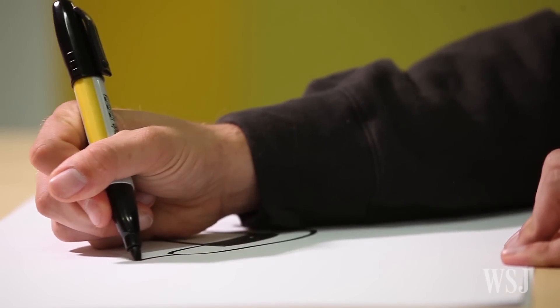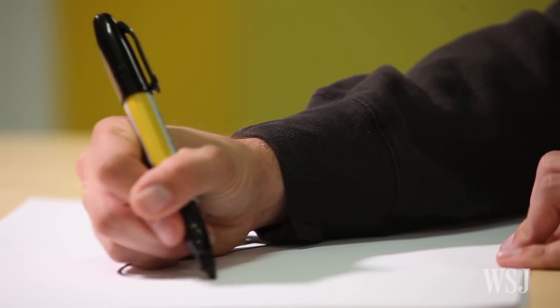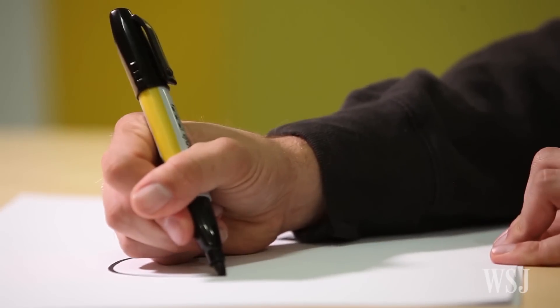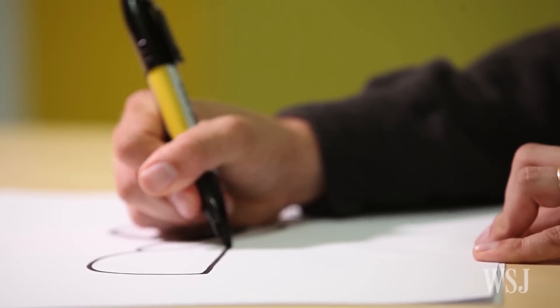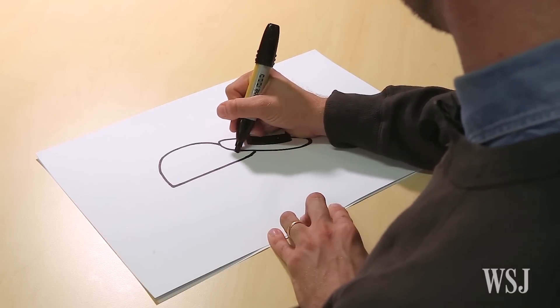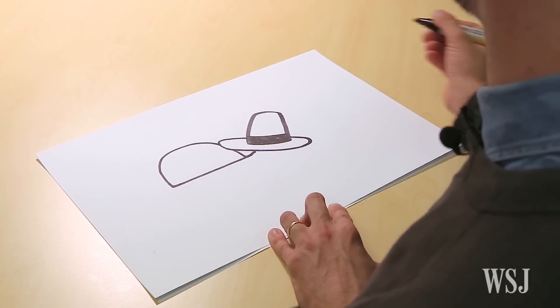The turtle shell starts kind of here. You draw across, and there's the turtle's neck just starting.